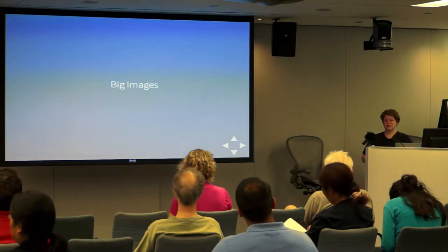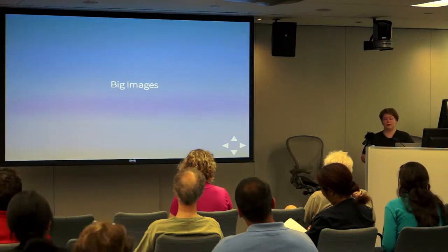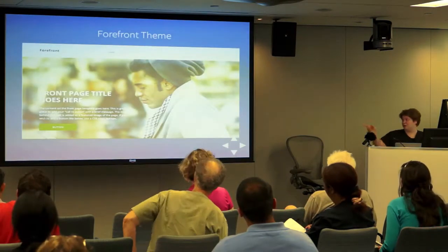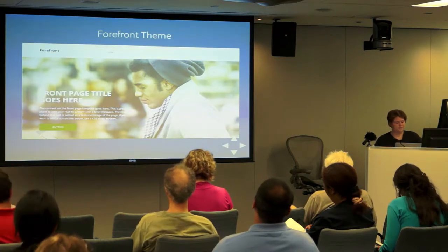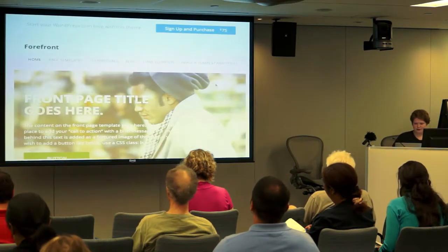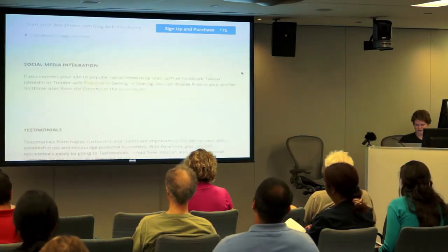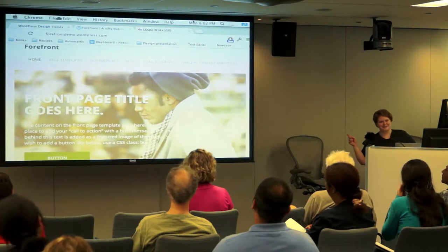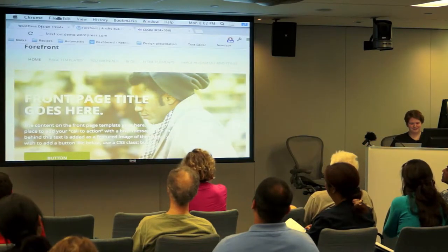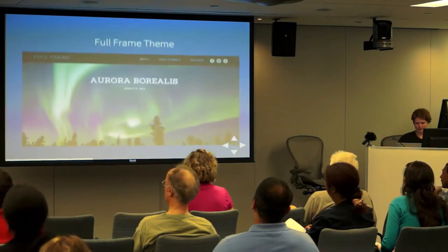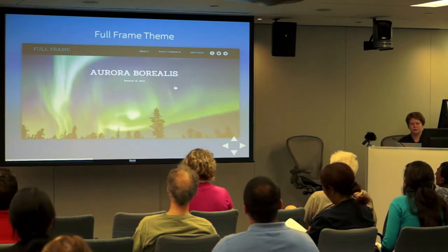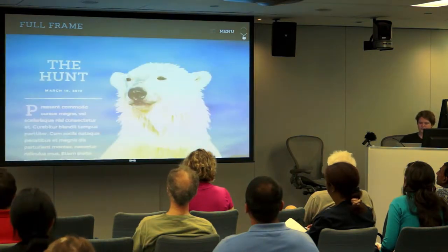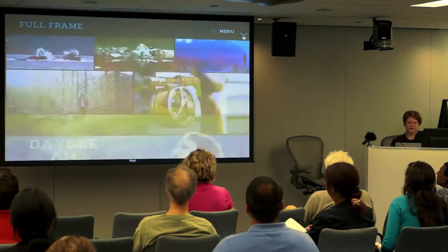One of the first design trends I've noticed in the past six months to a year is big images. Big images are the new sliders. Here we have the Forefront theme — it's a theme we have on WordPress.com. It's got a nice big image. Then we have another theme called Full Frame. It's like a photo blogging theme, and it's just big image after big image after big image.